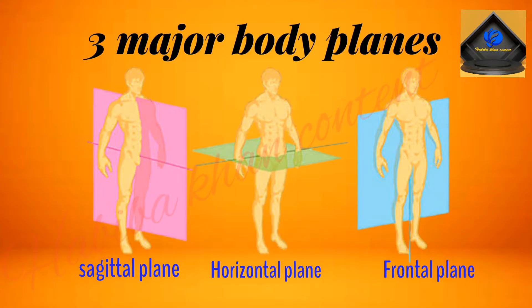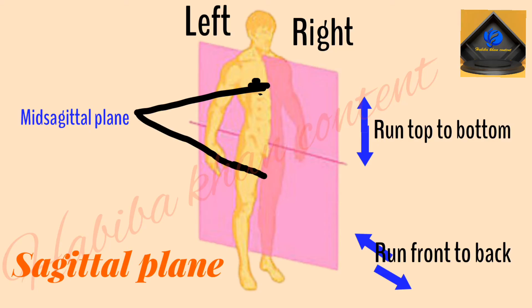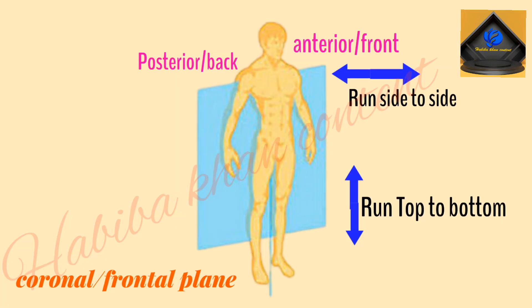There are three major body planes: sagittal planes, coronal or frontal plane, and transverse planes. Sagittal planes run from the top of the body to the bottom and from front to back, dividing the body into left and right sections. If a sagittal plane runs down the midline of the body and divides the body into equal halves, it is called a mid-sagittal plane.